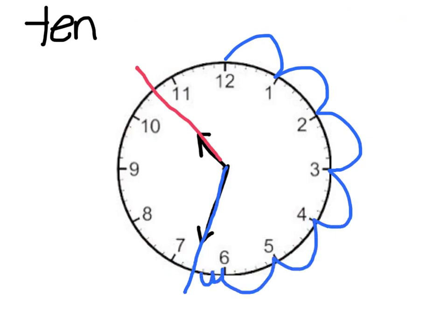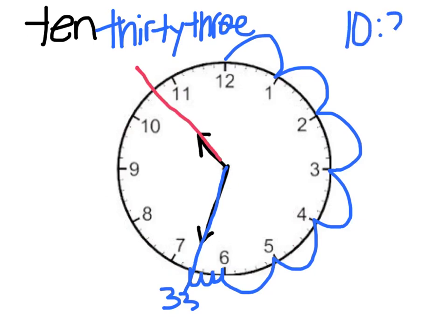Thirty-one, thirty-two, thirty-three. So it is ten thirty-three on this clock. We could also write it as ten thirty-three.